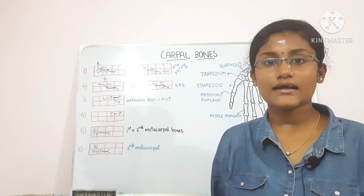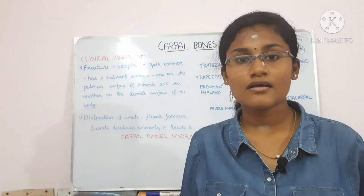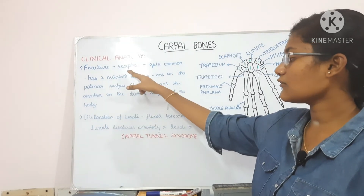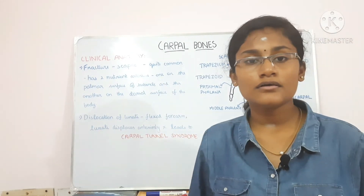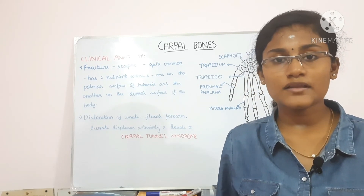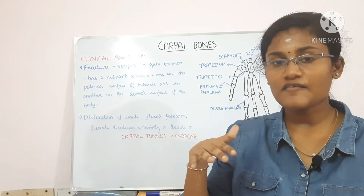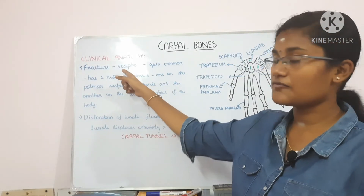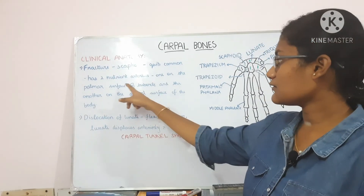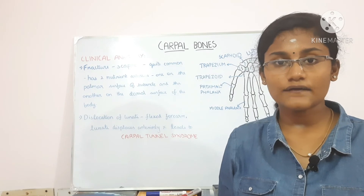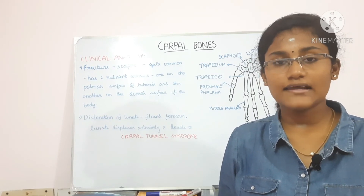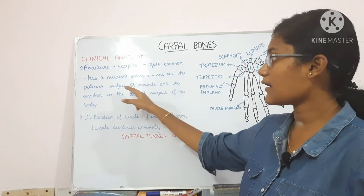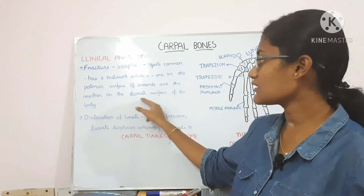Now let's talk about the clinical anatomy. In the clinical anatomy of the wrist bones, there are two main things: the fracture of the scaphoid and the dislocation of the lunate. Fracture of the scaphoid happens when we fall with our outstretched hand or with the tips of our fingers, and it leads to swelling and tenderness. There are two nutrient arteries which pass through the scaphoid — one on the palmar surface of the tubercle and the other on the dorsal surface of the body. Occasionally, in 13% of cases, both nutrient arteries may pass through only one surface, and if a fracture happens in such a condition, the proximal part of the scaphoid bone will not receive blood.